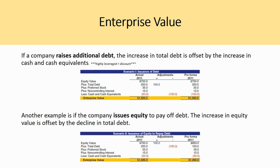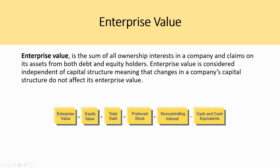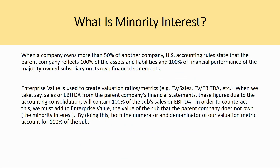A key question is: why do we add minority interest to enterprise value? When a company owns more than 50% of another company, U.S. accounting rules require the parent company to consolidate 100% of the subsidiary's assets, liabilities, and financial performance on its own statements. When we use sales or EBITDA from those financial statements in our valuation ratios, those figures contain 100% of the subsidiary's results. To counteract this, we add to enterprise value the value of the subsidiary that the parent does not own — the minority interest — so that both the numerator and denominator account for 100% of the subsidiary.